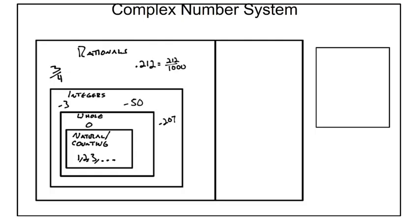Even if it's a decimal that repeats, like 0.3 repeating, that can be written as a fraction. So it's a rational number as well. Our rational numbers are our fractions and our decimals.